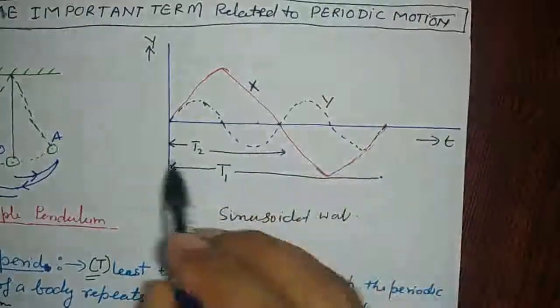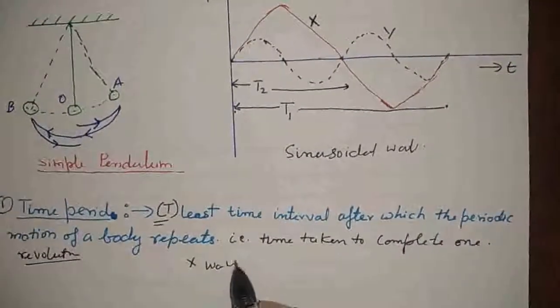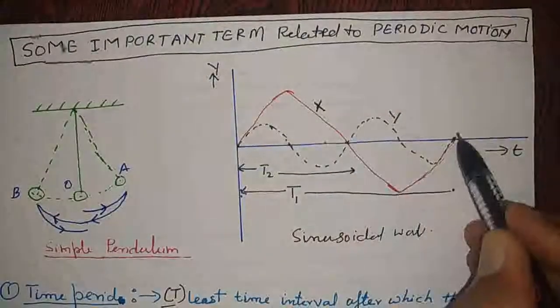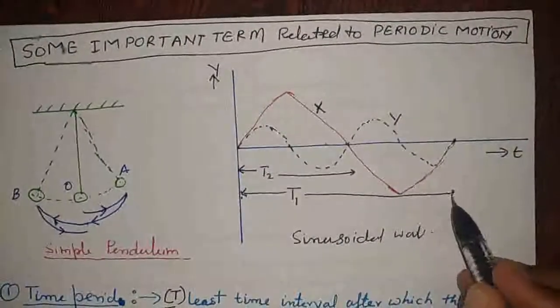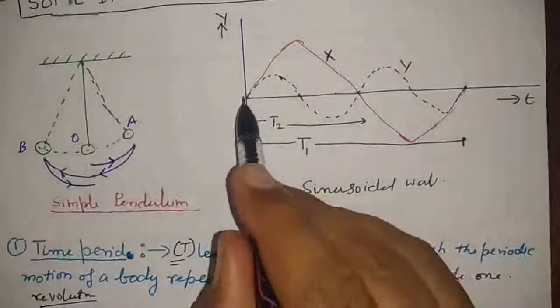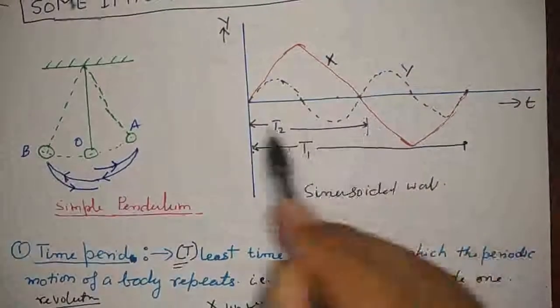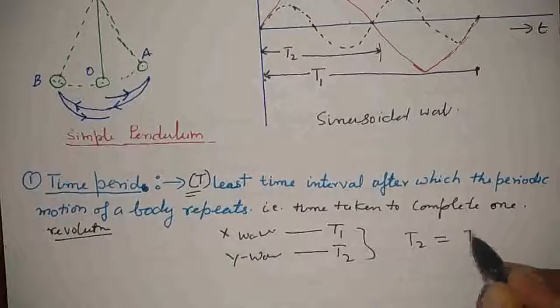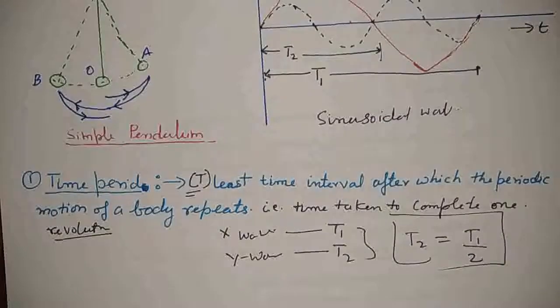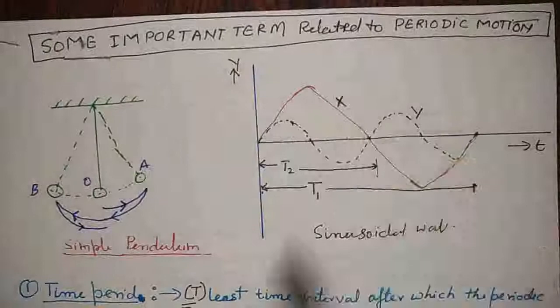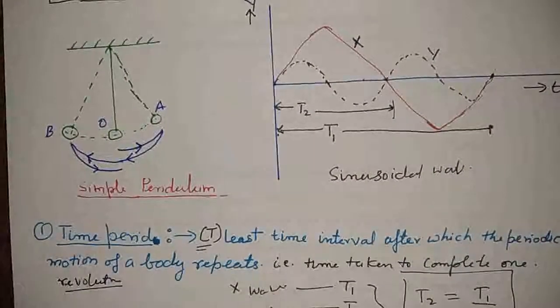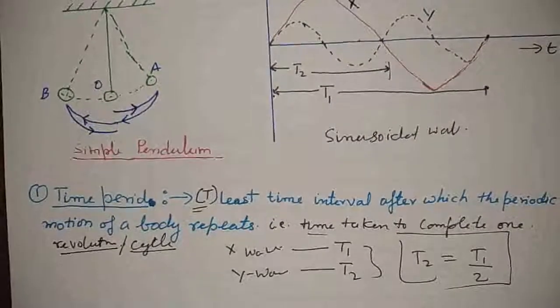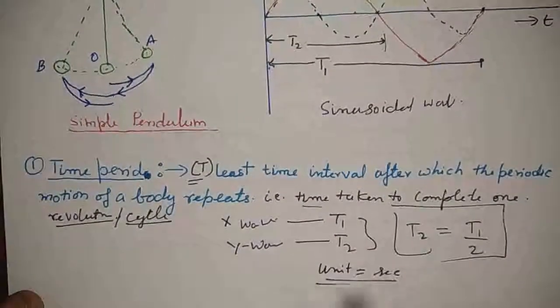In this sinusoidal wave, if we take this X wave, which has a time period, one oscillation, this is one complete wave. So time period is denoted here and represented by T1. For the second wave, the time period is T2. For Y wave, the time period is T2. And here in the diagram, T2 is just half of the first time period. What is time period? Time taken to complete one cycle or one revolution. Its unit is second.